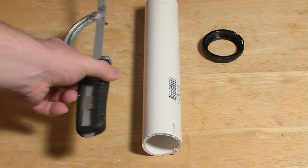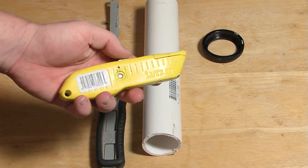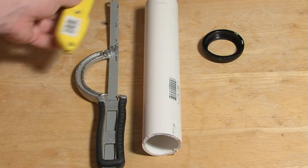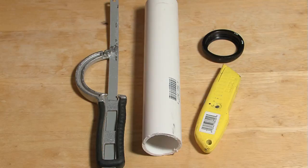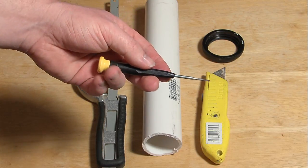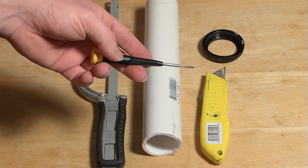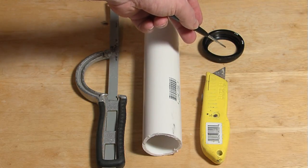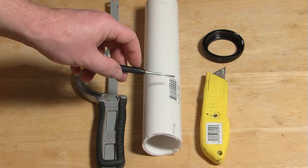You will also need a saw, a box cutter or other knife, a small screwdriver, and this is used for operating the screws used to attach the T-mount adapter to the T-mount that we are going to create out of the PVC.